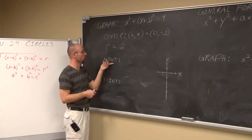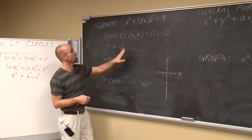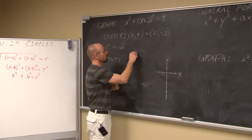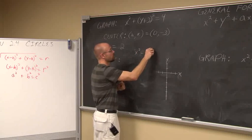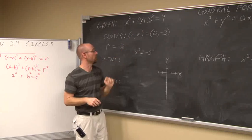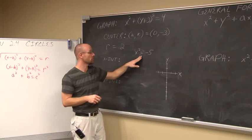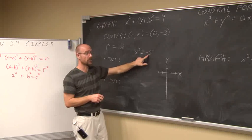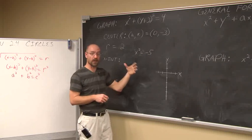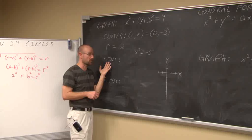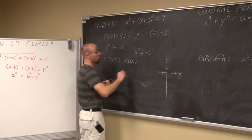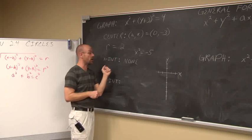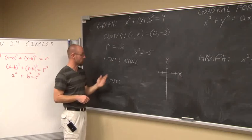Let's find some additional information. We know how to find x-intercepts — we set y equal to 0. If y is 0, then 3 squared is 9; subtracting 9 from both sides gives x squared equals negative 5. To solve this I take the square root of both sides, but I'm taking the square root of a negative number. That's not a real value — it's imaginary. That tells me there are no x-intercepts, meaning the circle will not cross the x-axis.